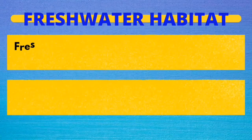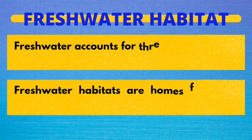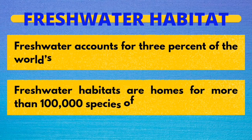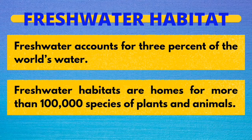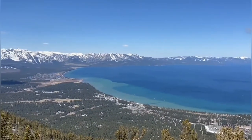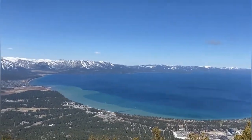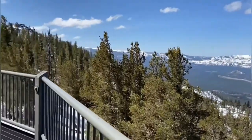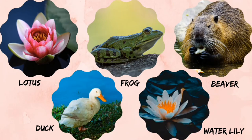Around 3% of total earth's water is fresh. Freshwater habitats are home to more than 100,000 species of plants and animals. Rivers, lakes, streams and ponds are examples of freshwater habitat. Lotus, water lily, duck, beavers and frog are found in freshwater habitat.